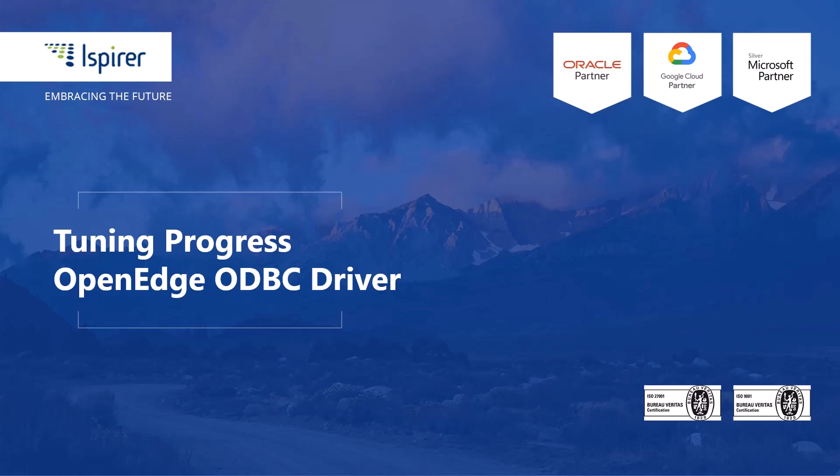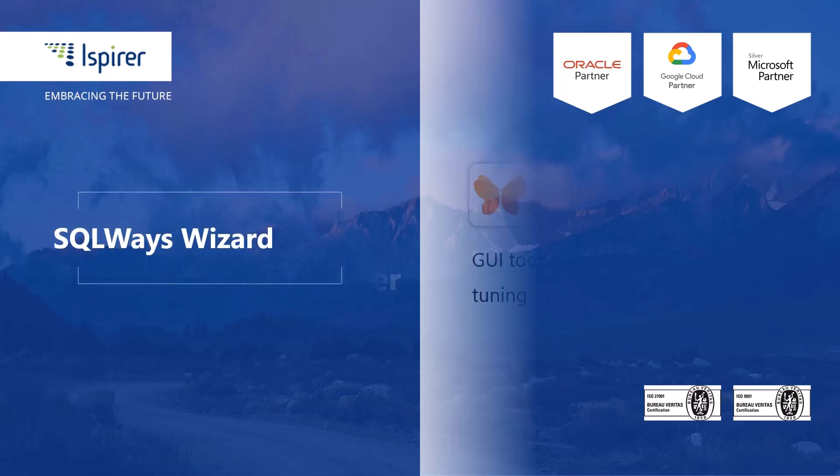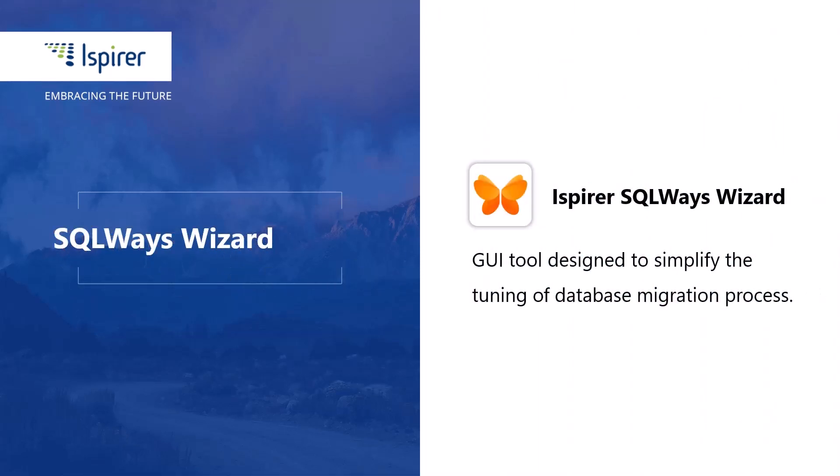Hi everyone, today I'd like to show you how to configure an ODBC connection to the Progress database. The connection will be used by SQLWaves Wizard to perform the conversion directly from the database.